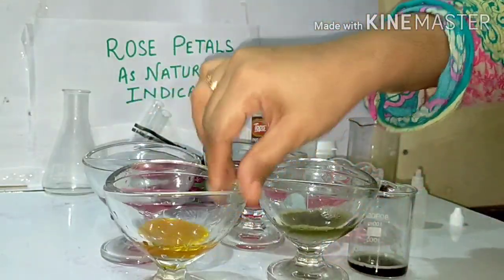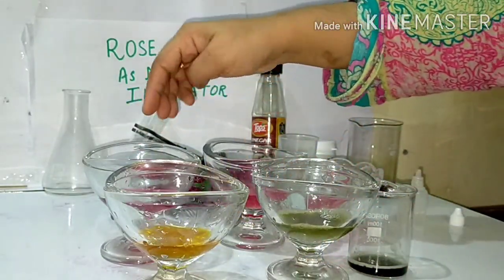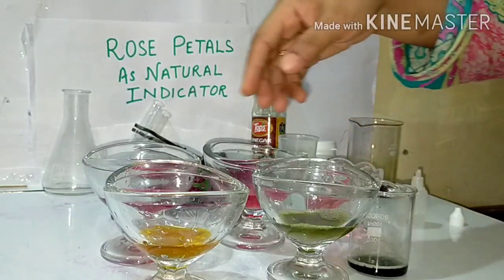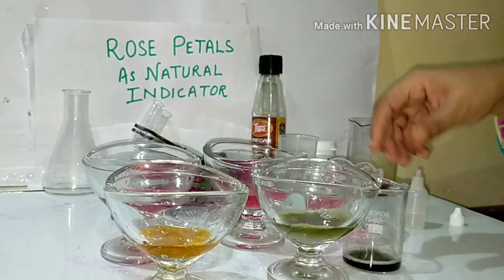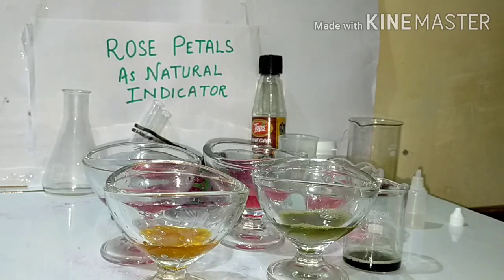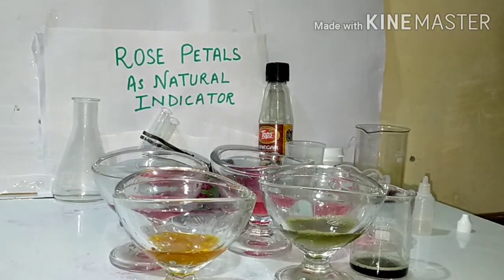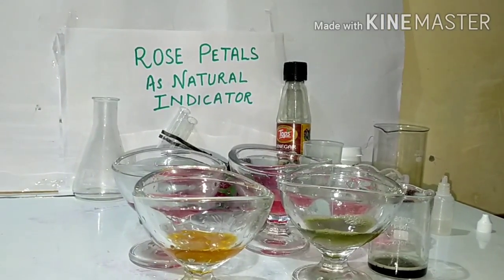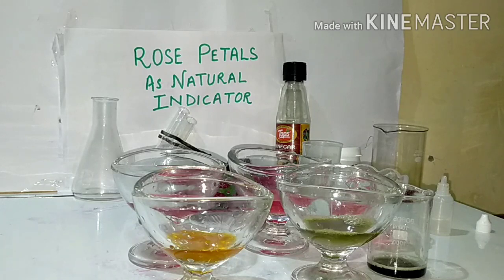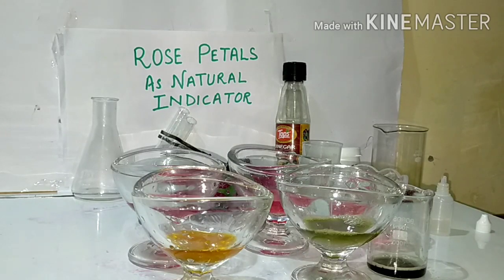So you can see in acid the color changes from red to pink, and in base from yellow to green. You can see all the colors and you can do some other experiments with household things. I think you have enjoyed this video. In the next class I will show some other experiment with some other indicators. Till then, take care. Thank you.